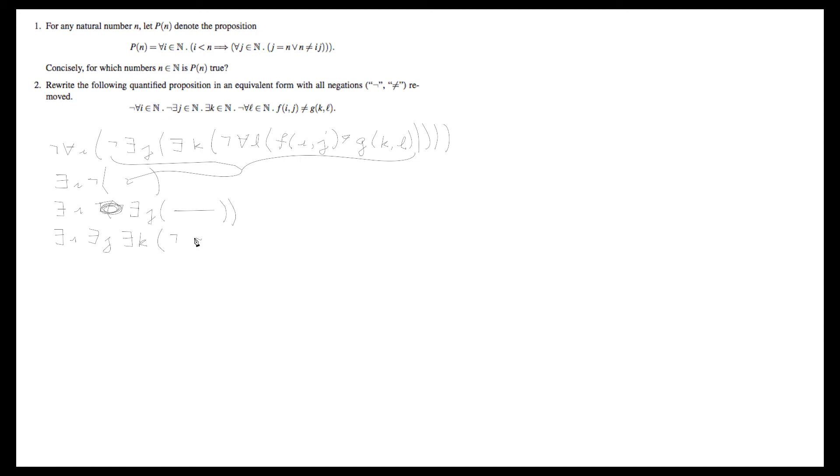And now we have not for all l, and then this expression goes here. So again the not hits the for all and turns it into there exists an l such that not the stuff in parenthesis, which means that it's actually there exists an l such that f of i j equals g of k l, because that's the negation of not equals. And we copy all this stuff down as well.